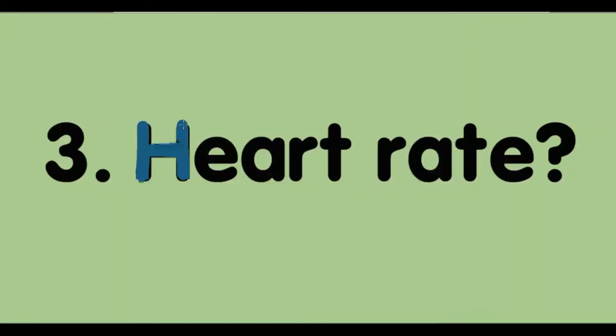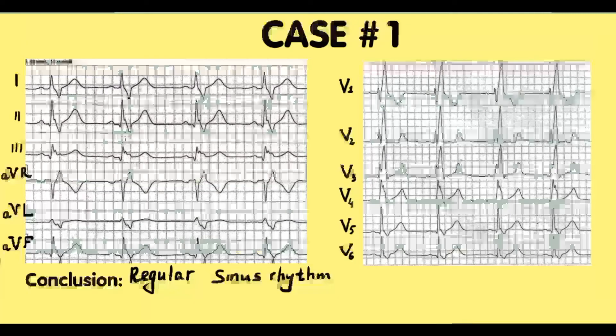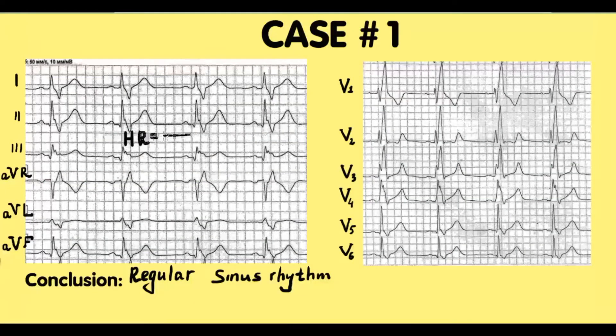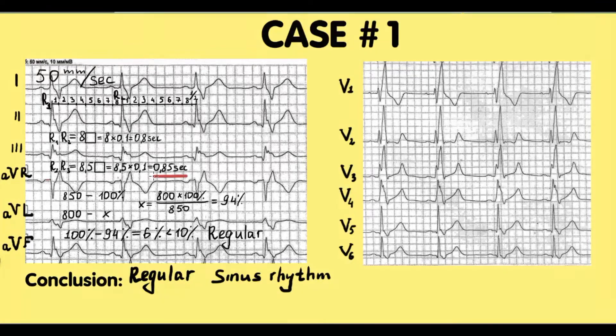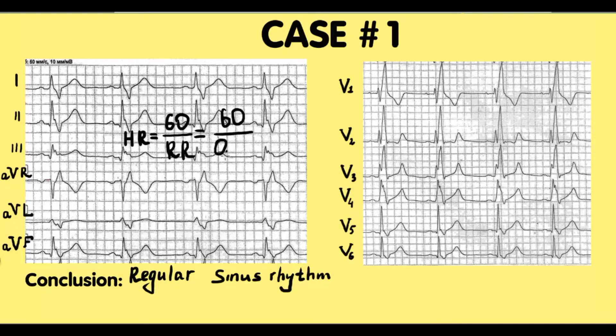The next step is heart rate calculation. For this we need 60 divided by the RR in seconds. The benefit is that we already have the RR interval from the previous step. Heart rate is 70 beats per minute.